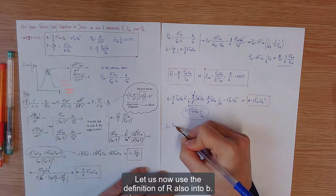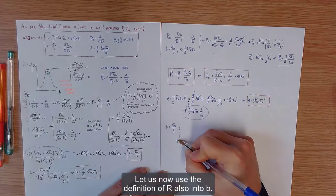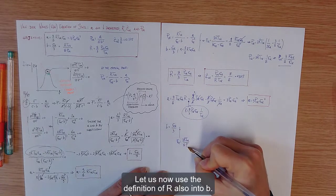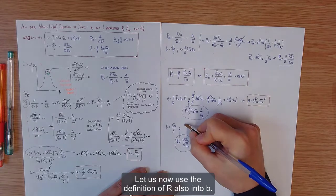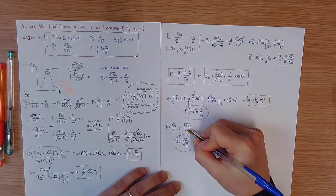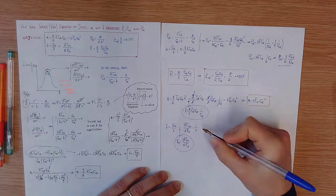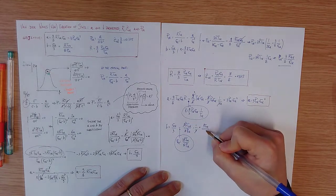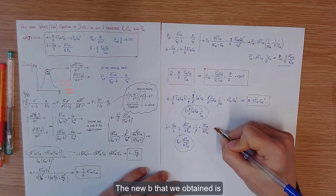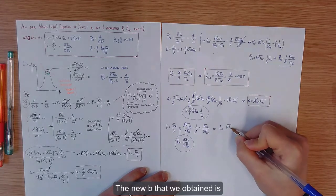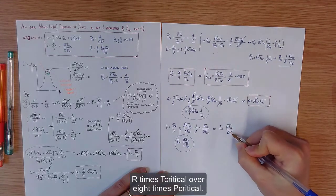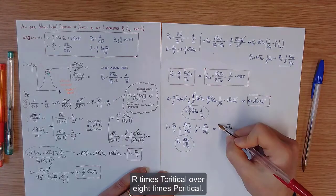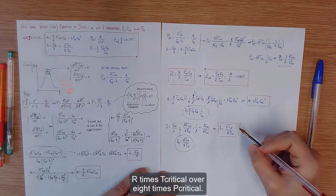Let us now use the definition of R also into b. The new b that we obtain is R times T critical over 8 times p critical.